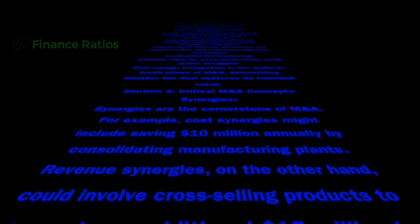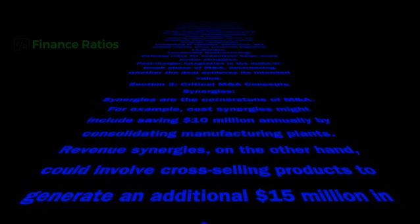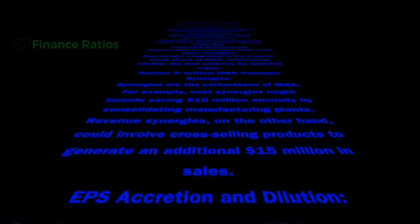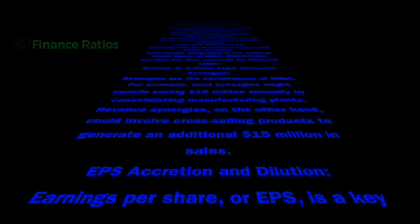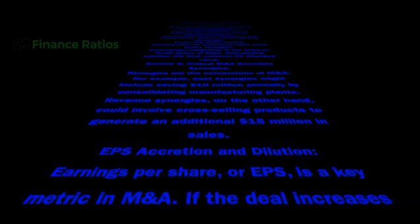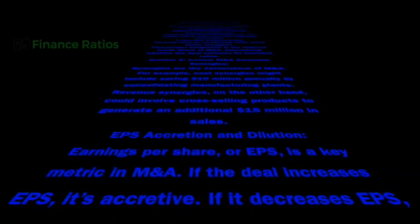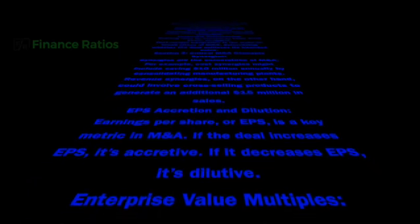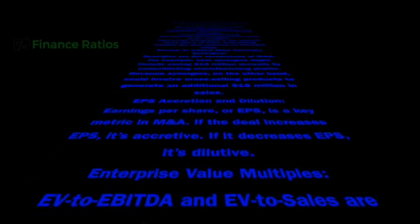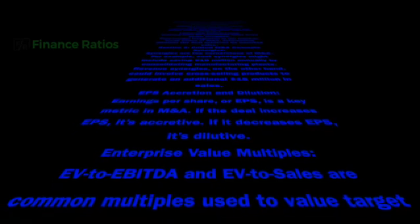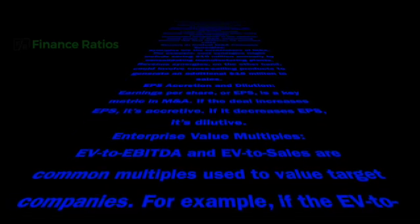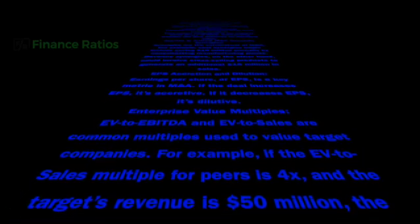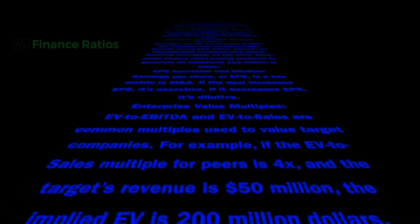EPS Accretion and Dilution: Earnings Per Share (EPS) is a key metric in M&A. If the deal increases EPS, it's accretive; if it decreases EPS, it's dilutive. Enterprise Value Multiples such as EV/EBITDA and EV/Sales are common multiples used to value target companies. For example, if the EV/Sales multiple for peers is 4x and the target's revenue is $50 million, the implied enterprise value is $200 million.